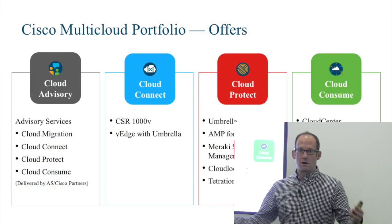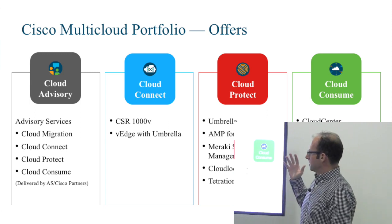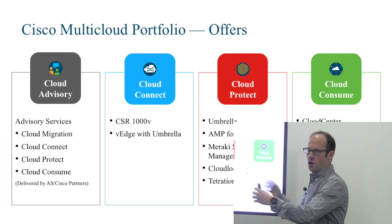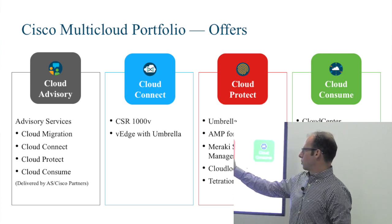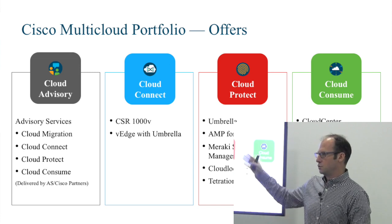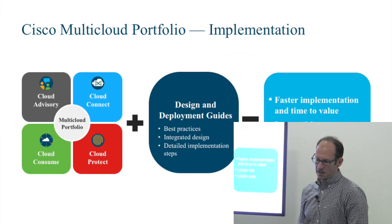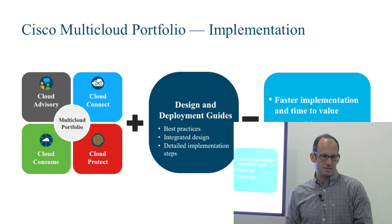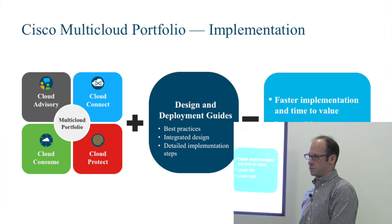Here are some of the products available today across these pillars, but this is just the beginning — more products are joining. What we do is ensure the products work well together: they can be managed and orchestrated, we can correlate information across solutions, and our Advanced Services and partners have design guides to help customers deploy each solution. There are also deployment guides and best practices that lower the risks of migrating to the cloud.